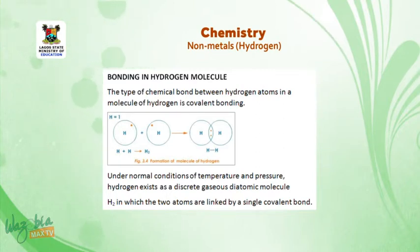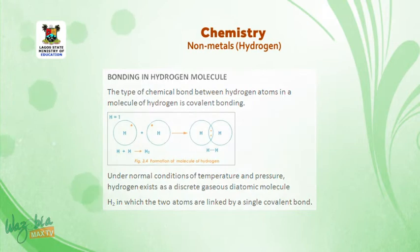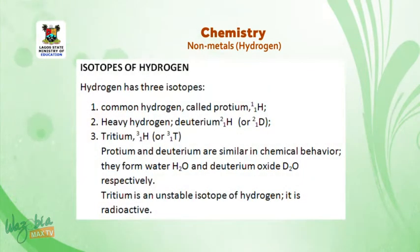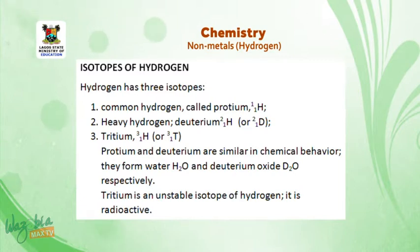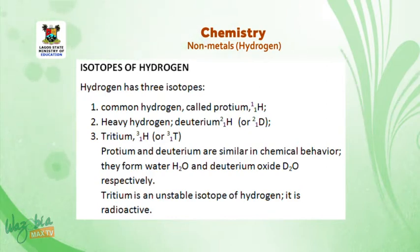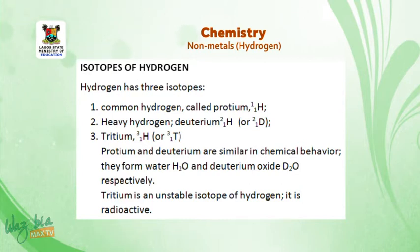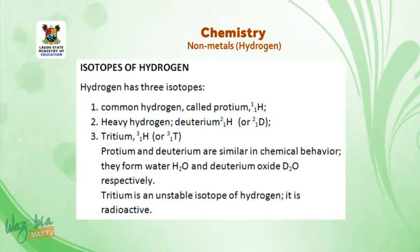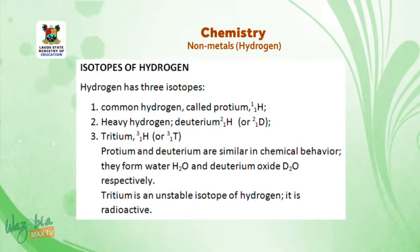Isotopes of hydrogen: Hydrogen has three isotopes. Number one is common hydrogen called protium, with a nuclear symbol ¹₁H. Number two is heavy hydrogen, also known as deuterium, with a nuclear symbol ²₁H or ²₁D. And number three is tritium, which has a nuclear symbol of ³₁H or ³₁T. Protium and deuterium are similar in chemical behaviour. They form water H₂O and deuterium oxide D₂O, also known as heavy water, respectively.